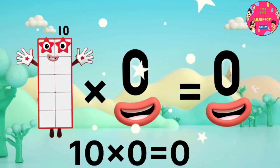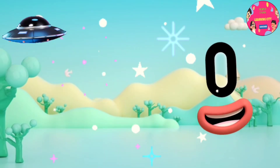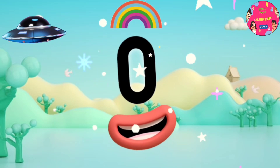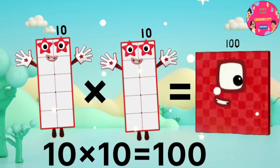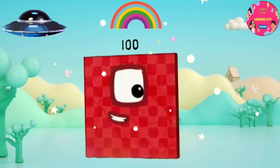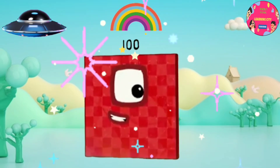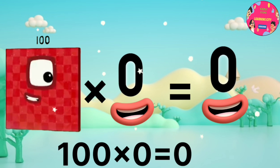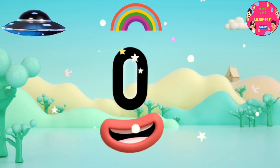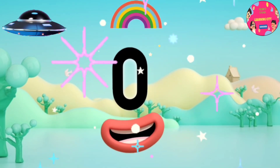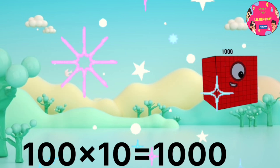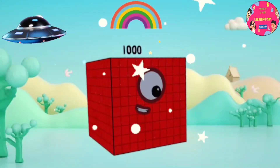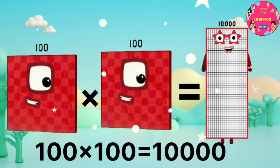10 x 0 equals 0. 10 x 10 equals 100. 100 x 0 equals 0. 100 x 10 equals 1000. 100 x 100 equals 10,000.